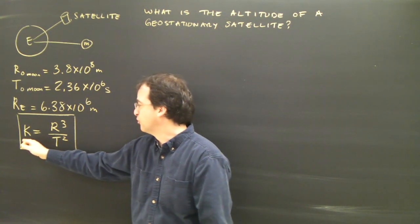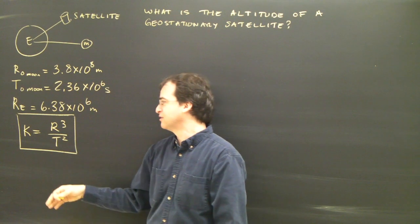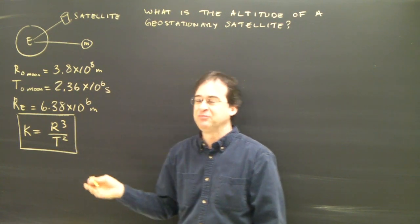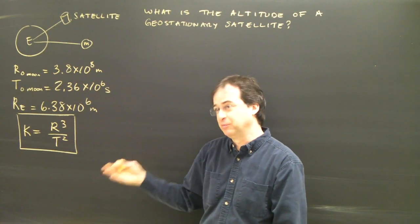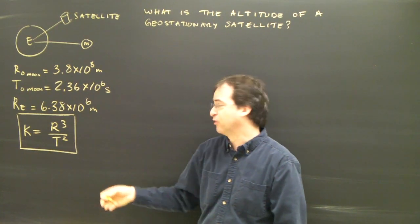And that constant is the same for any object orbiting that central object. So there's a constant for the sun, meaning anything going around the sun has that same constant for each planet. Anything going around the Earth would have a different constant, but it would be constant for anything orbiting Earth.